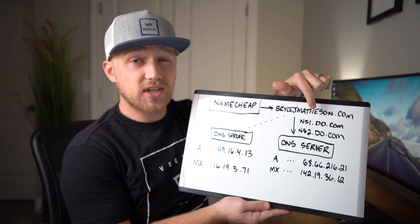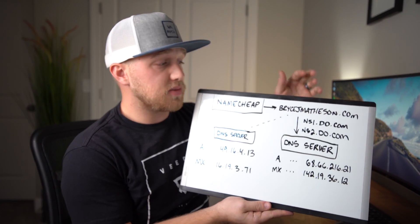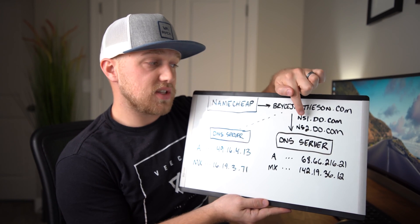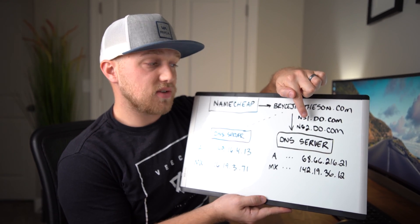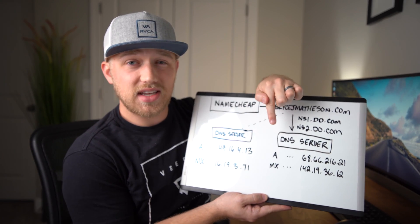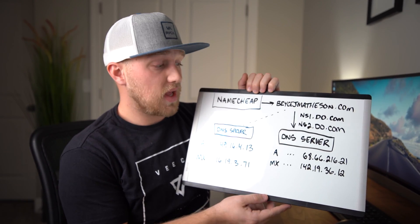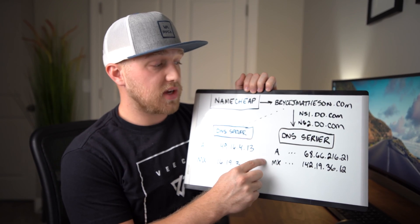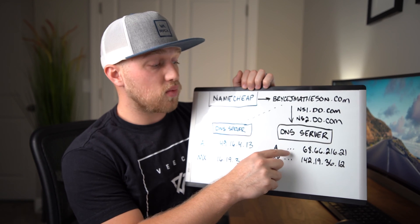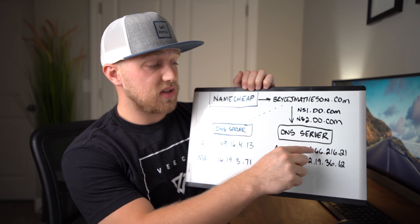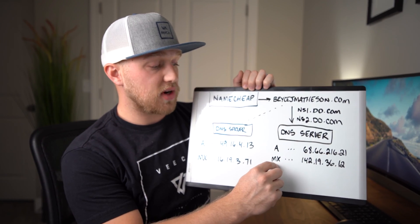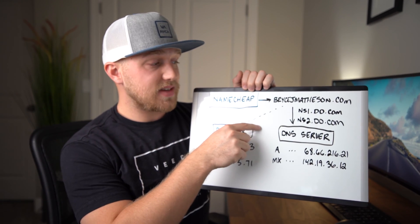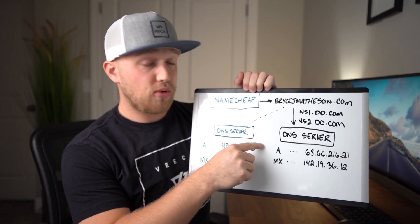I use DigitalOcean — that's what I like for my name servers. But once I point my domain name to those name servers, I still have to set my DNS entries. So I'll go to DigitalOcean and I will set up my A records, and I'll also set up my MX records. My A record — whatever domain name I choose — will point to a specific IP address, and my MX records will point accordingly.